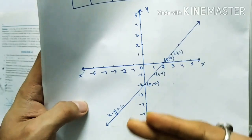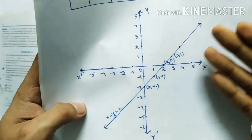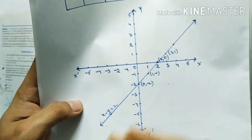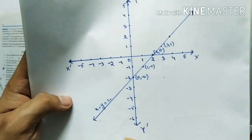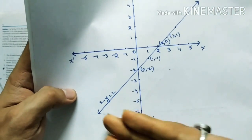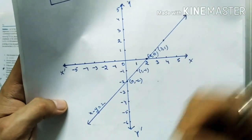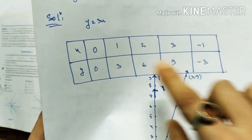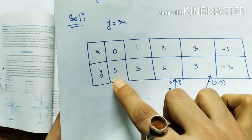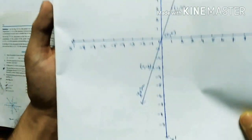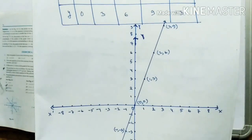This shows that a linear equation in two variables has infinitely many solutions, because it is a line. A line extends indefinitely in both directions and consists of infinitely many points. All points on this straight line are solutions of the equation. Similarly, for the third graph, y equals 3x: draw the table — (0,0), (1,3), (2,6), (3,9), (minus1, minus3) — plot the points and join them with a straight line.